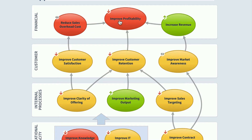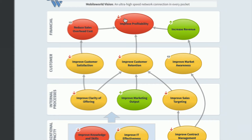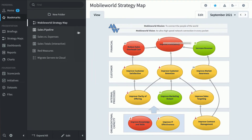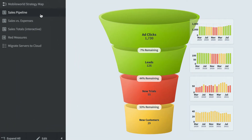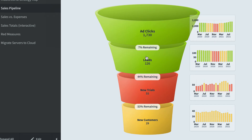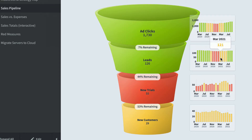I can see here that improved profitability is not doing great and that it's trending down from the previous month. Here is a sales pipeline dashboard where I can see how ad clicks go into leads, new trials, and new customers. Leads took a dip about a year ago and then improved performance more recently.